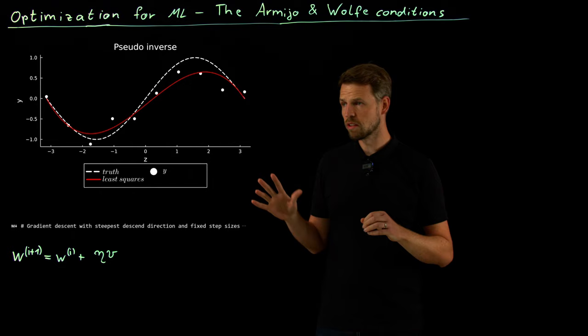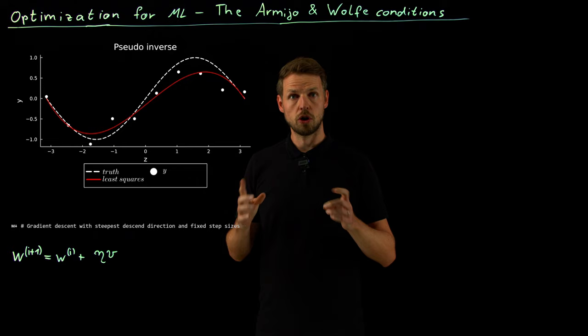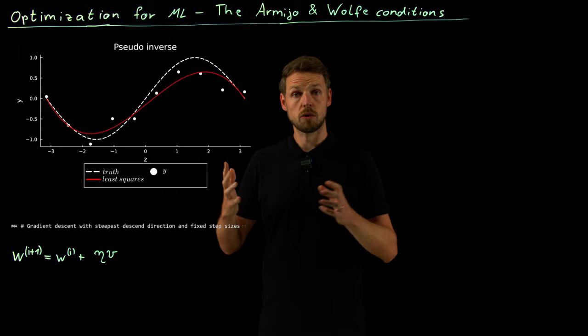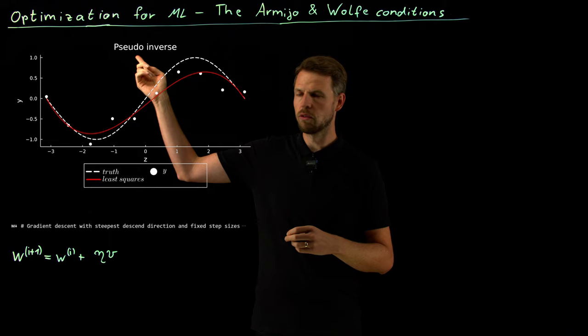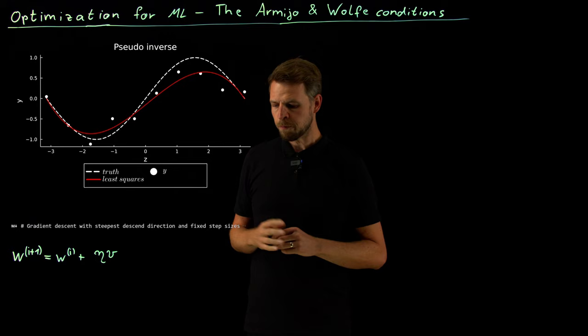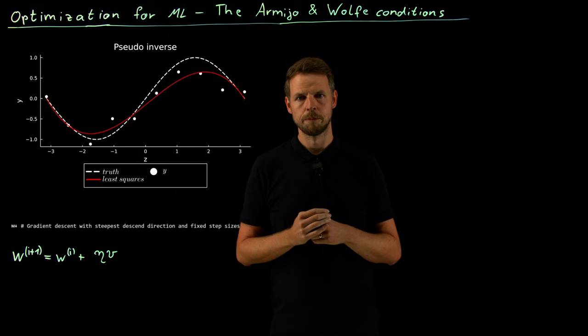If you look at this example once more, this was the example we considered through all these videos where we have the sine function and we have these 10 measurements which are corrupted by noise. The plan is now to fit a polynomial of order 3 to the data. Because we use a linear model, we can find this using a least squares ansatz and we use the pseudo inverse to solve this as a closed form solution. And what we got was this red curve. It's a convex problem with a unique minimizer, so gradient descent should in principle give us the exact same solution.